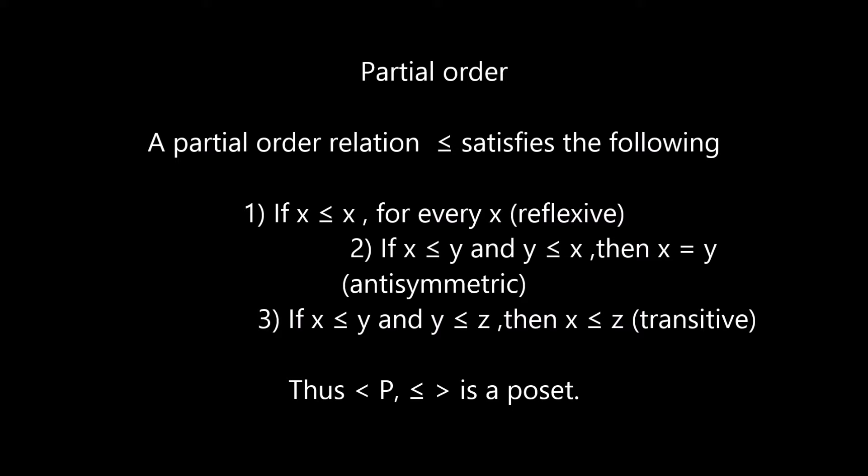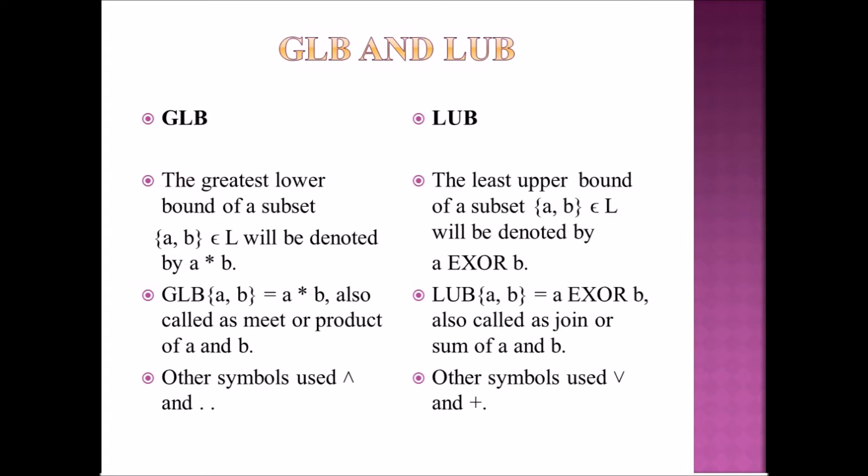The third property is transitivity. Thus the set (P, ≤) is transitive. Now we are going to look at GLB and LUB — Greatest Lower Bound and Least Upper Bound.